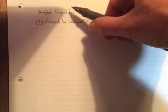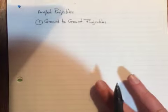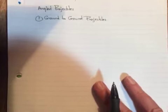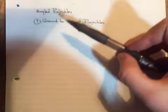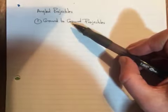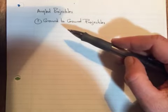So on Tuesday, if you have issues, we can go back and look at those. But right now, I'd like to spend a couple minutes just talking to you about angled projectiles. Because the ground to ground, or the horizontal ones are really pretty easy. For angled projectiles, there are two different categories.